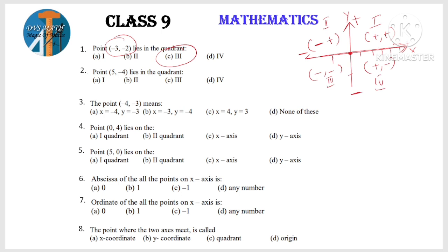This lesson's basics are easy — it's textbook related. Coming to the second question: Point (5, -4). Here x is plus and y is minus, so it lies in the 4th quadrant — plus comma minus.